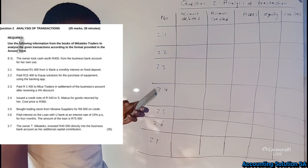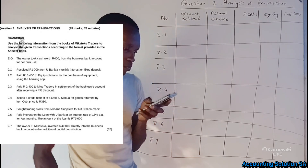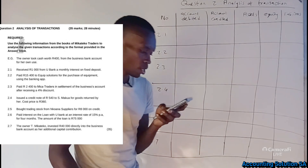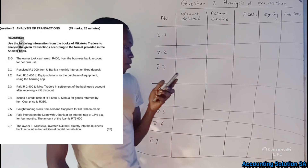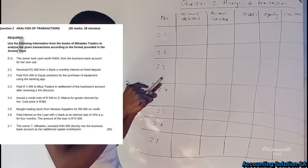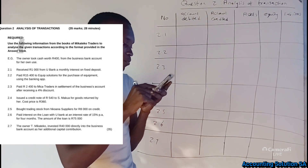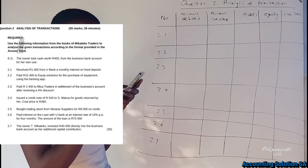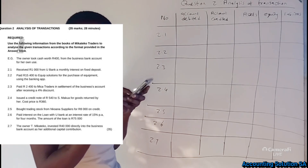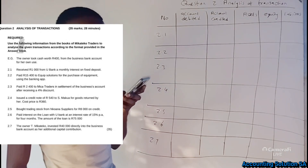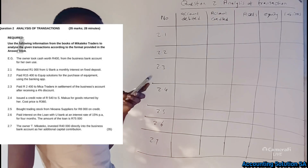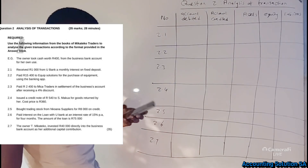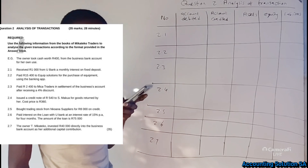It was Question 2 on this question paper and it contained 85 marks. They say: use the following information from the books of Mikateco Traders to analyze the given transactions according to the format provided in the answer book. The first one is an example.